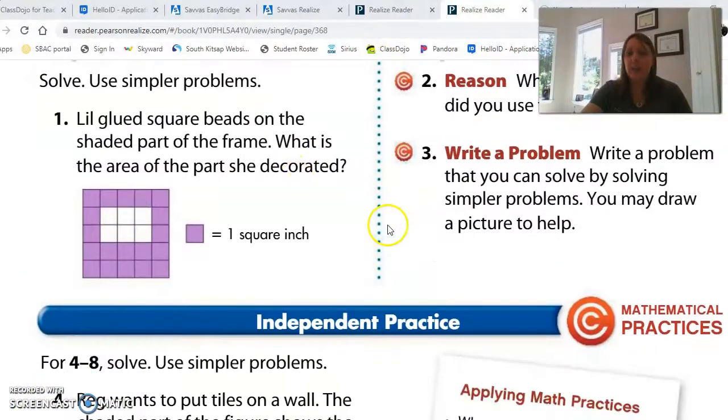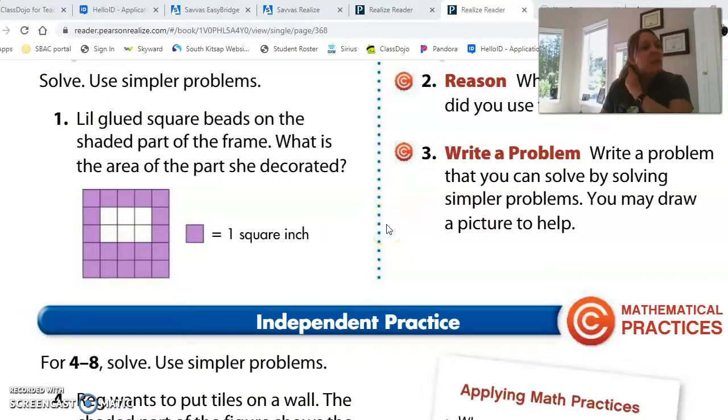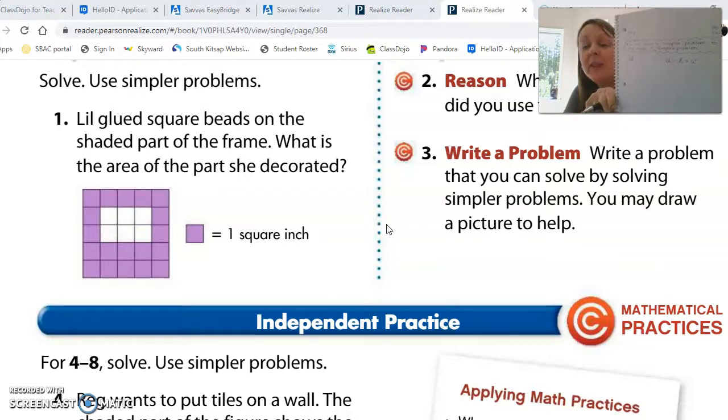In our guided practice, it's a lot like the video of the first one. So it says number one, Lil glued square beads on the shaded part of the frame. What is the area of the part she decorated? Now before I forget, I know you guys just love writing this down. I'm going to write down our formula so I don't forget it. That area equals length times width. Because remember, that's the easiest way to figure out.